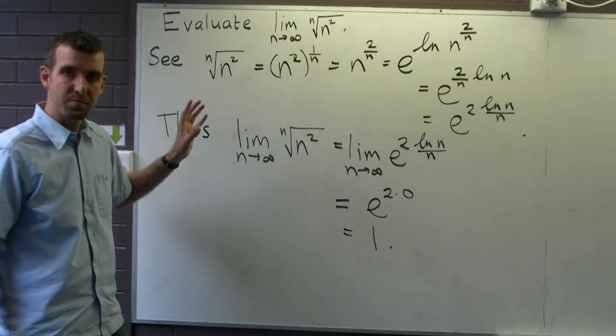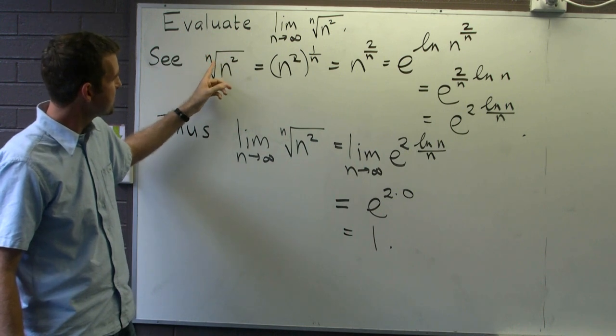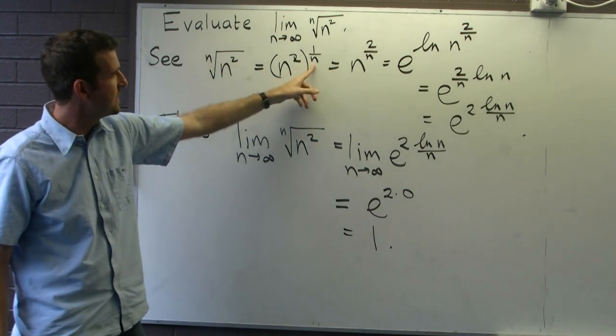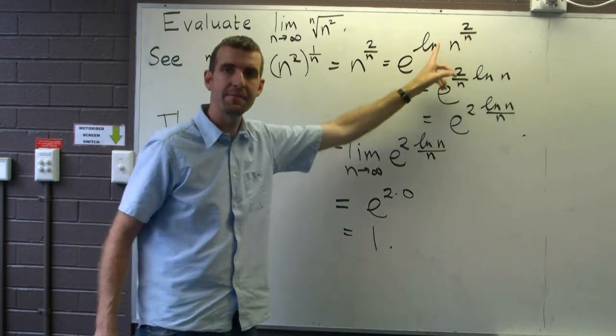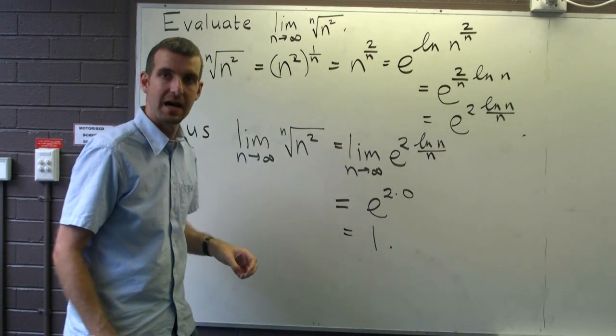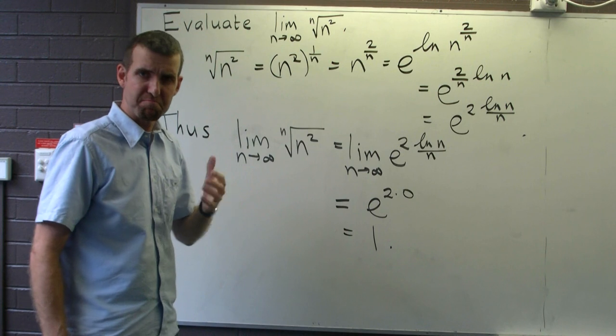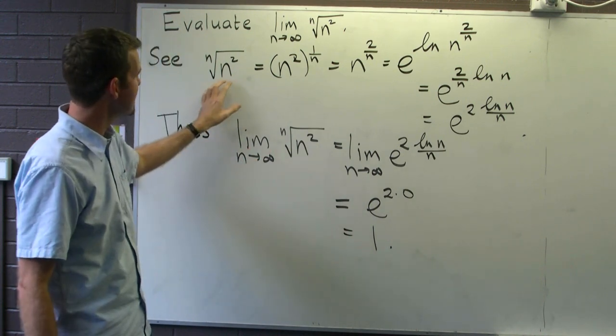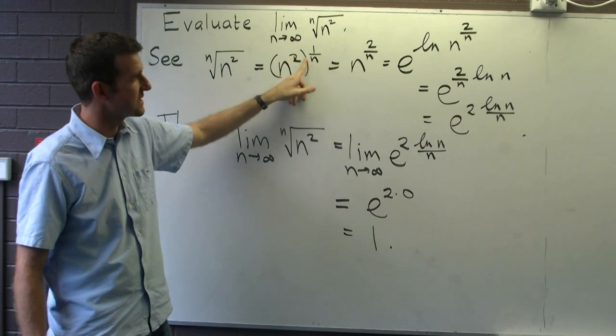So notice what was done here. The nth root was changed to an exponent, and then we took e to the log of the entire sequence, and then simplified. And the part of that sequence that really stood out and suggested that we use this method was the non-constant exponent.